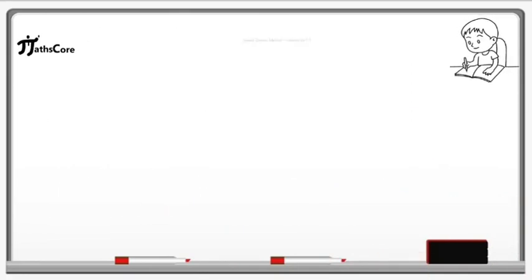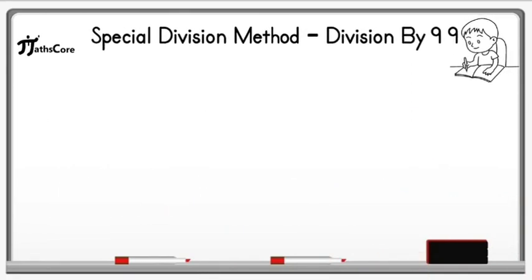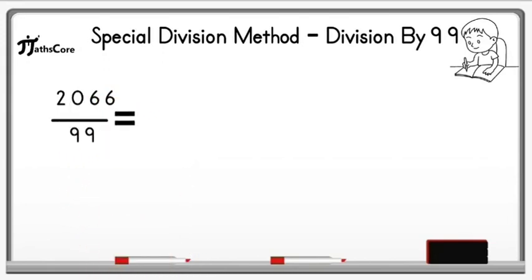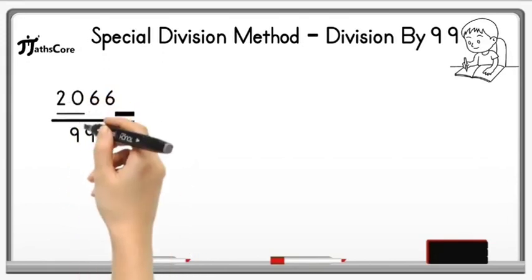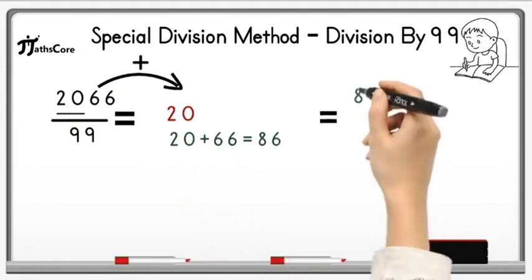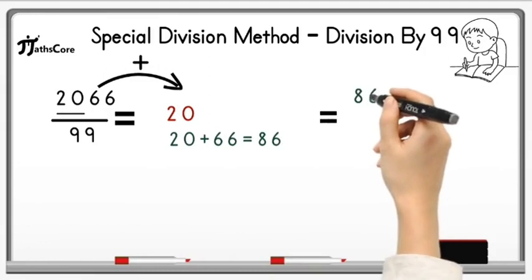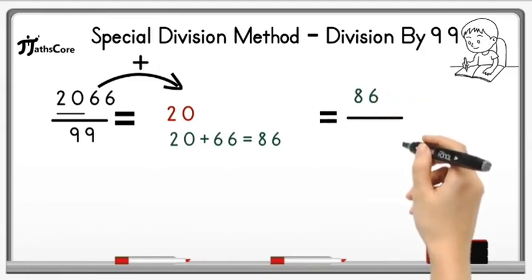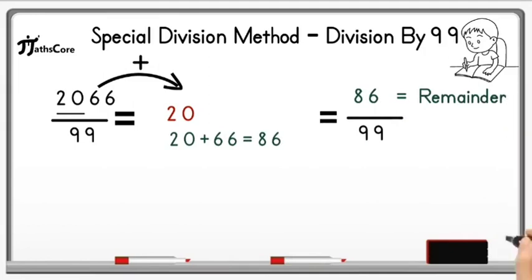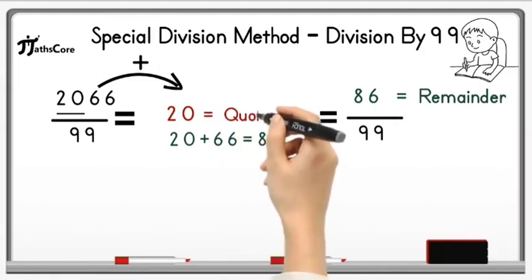Let's take one more example: 2066 divided by 99. Write down 20 here and add 66 to it. 20 plus 66 equals 86. Now divide 86 by 99 — not possible because 86 is less than 99. So 86 is the remainder and 20 is the quotient.